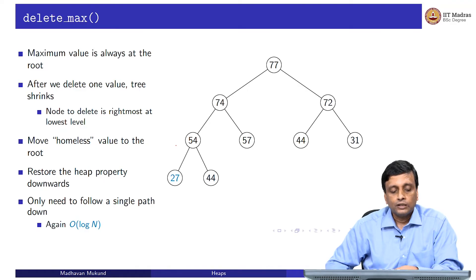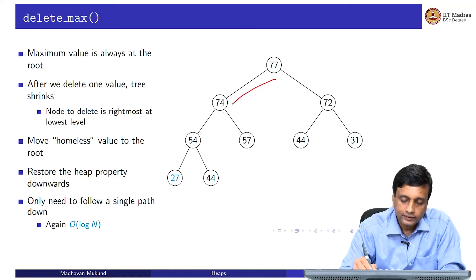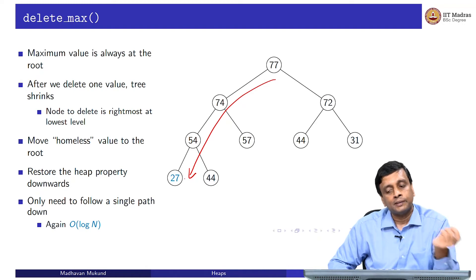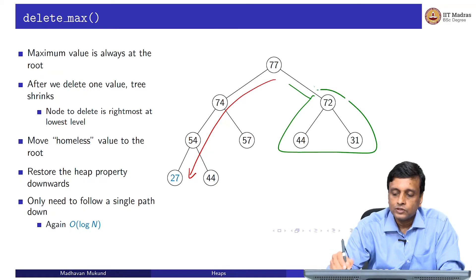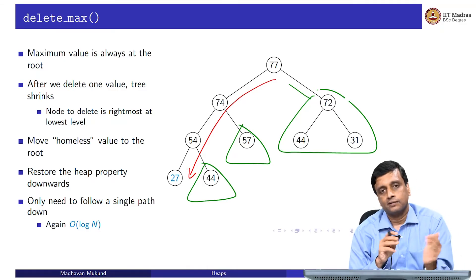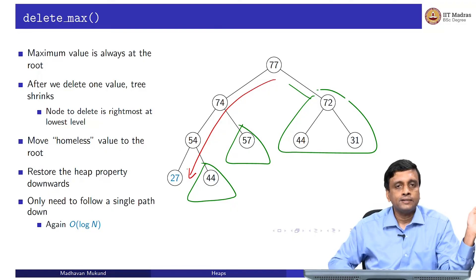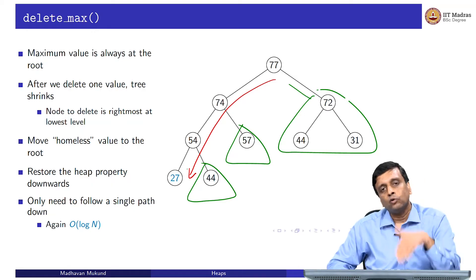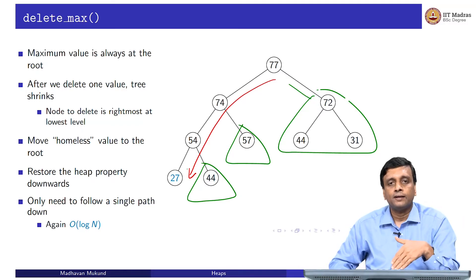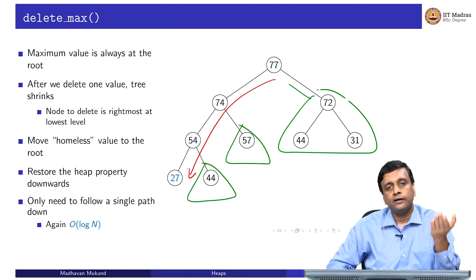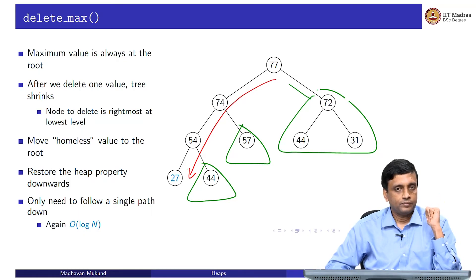The key insight is that we follow only one path downward. At each step, we choose the larger child to swap with, leaving the other subtree undisturbed and retaining its heap property. Just as insert moves up one path in O(log n) time, delete max moves down one path in O(log n) time, since the height is logarithmic in the size. So both insert and delete max are O(log n).